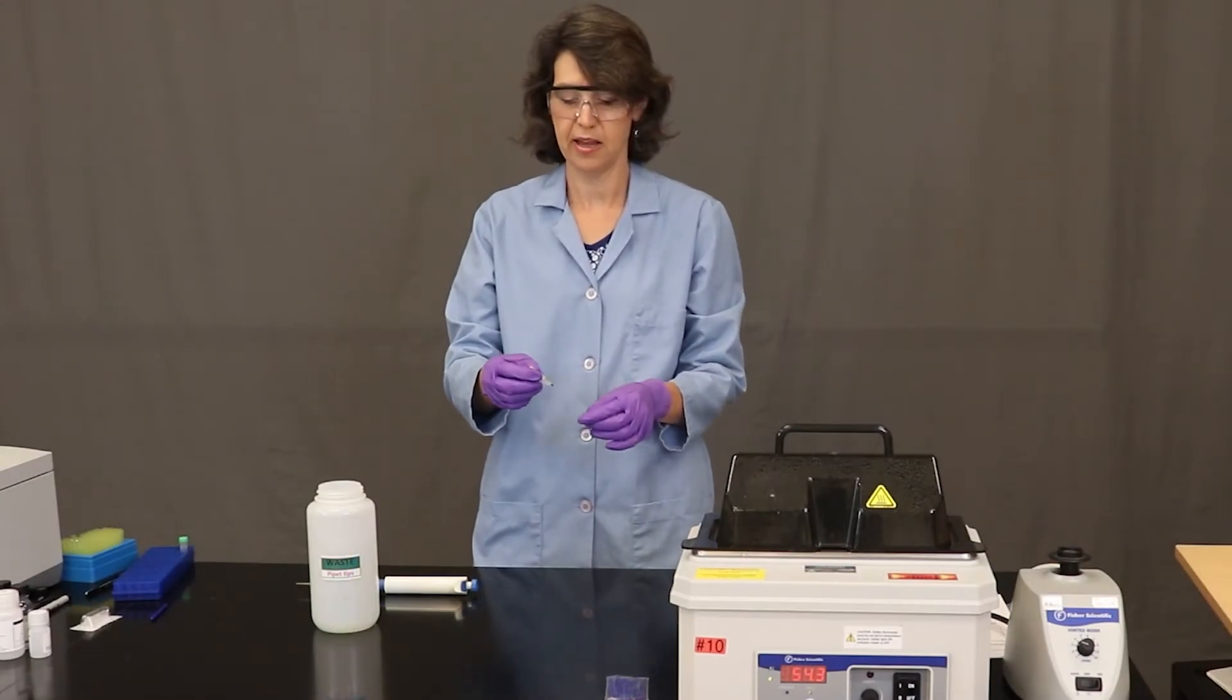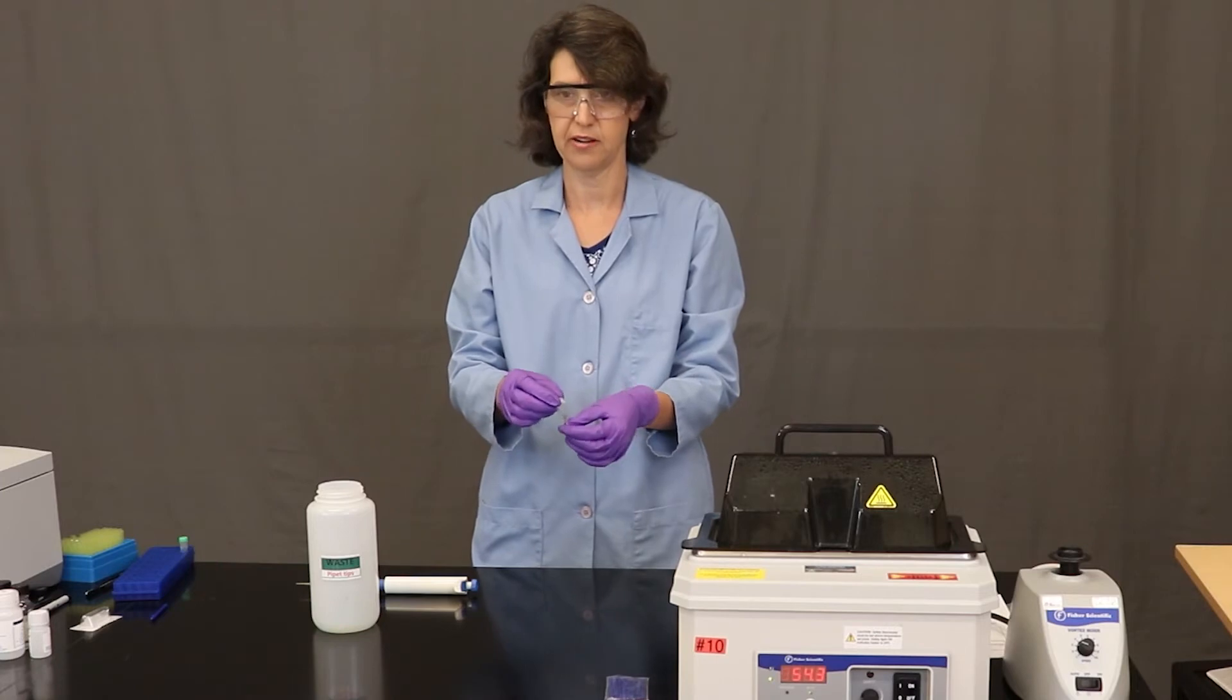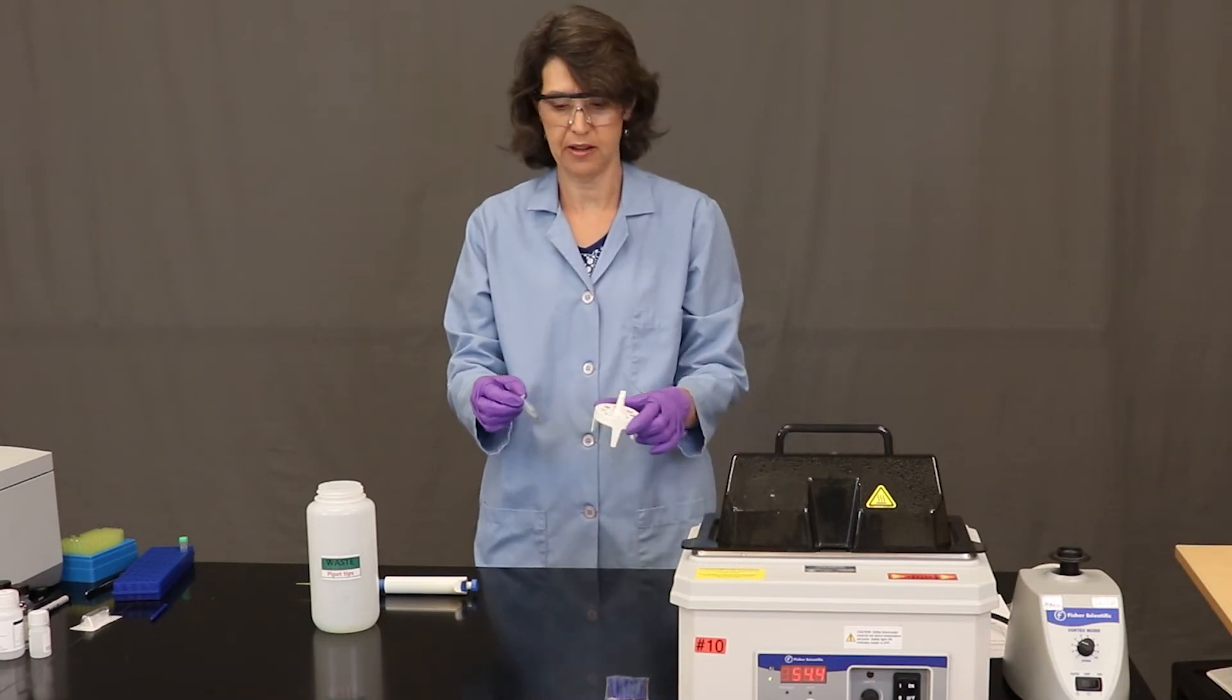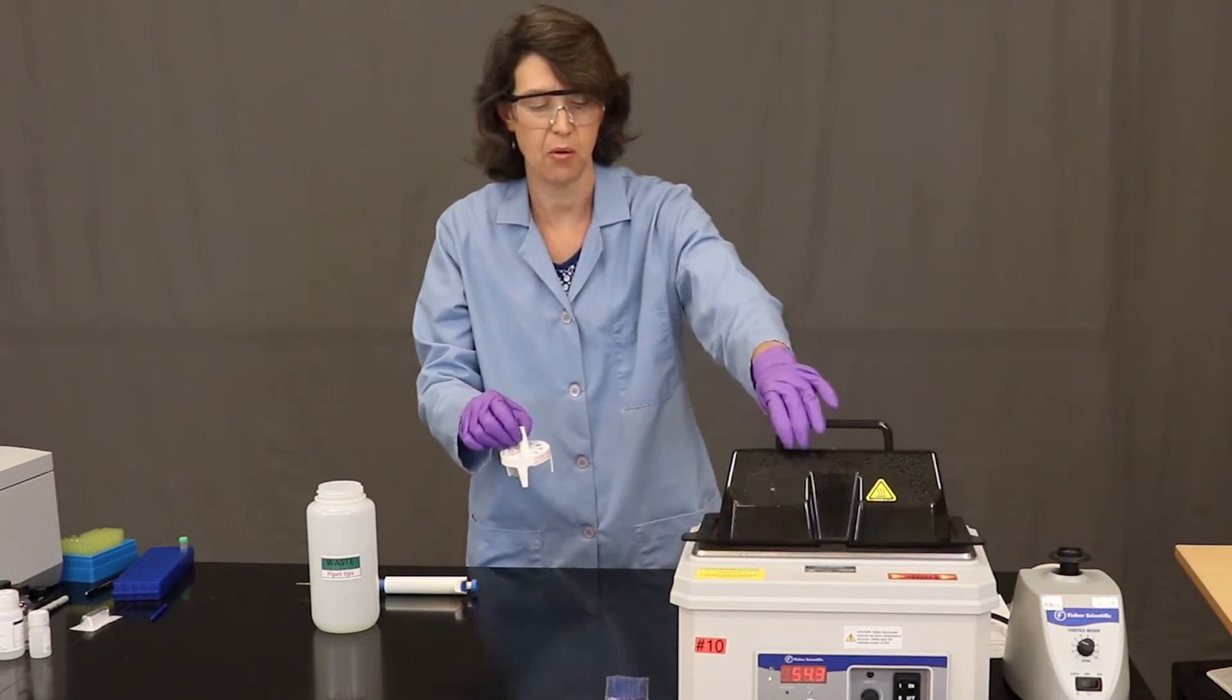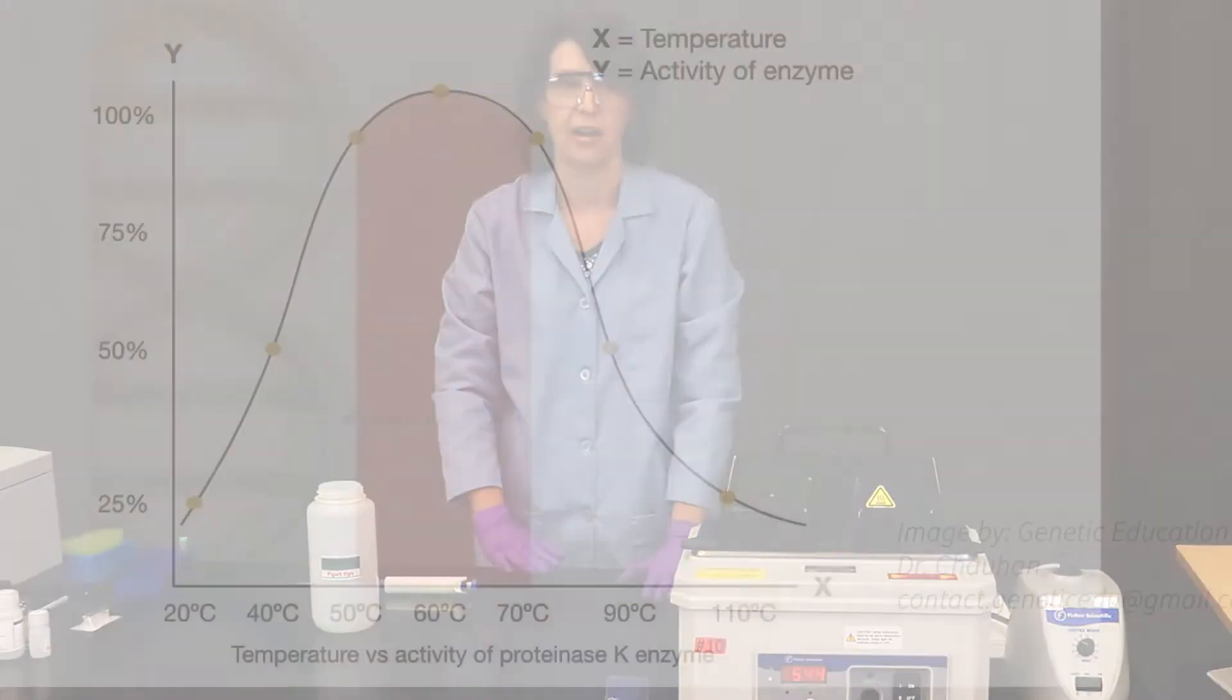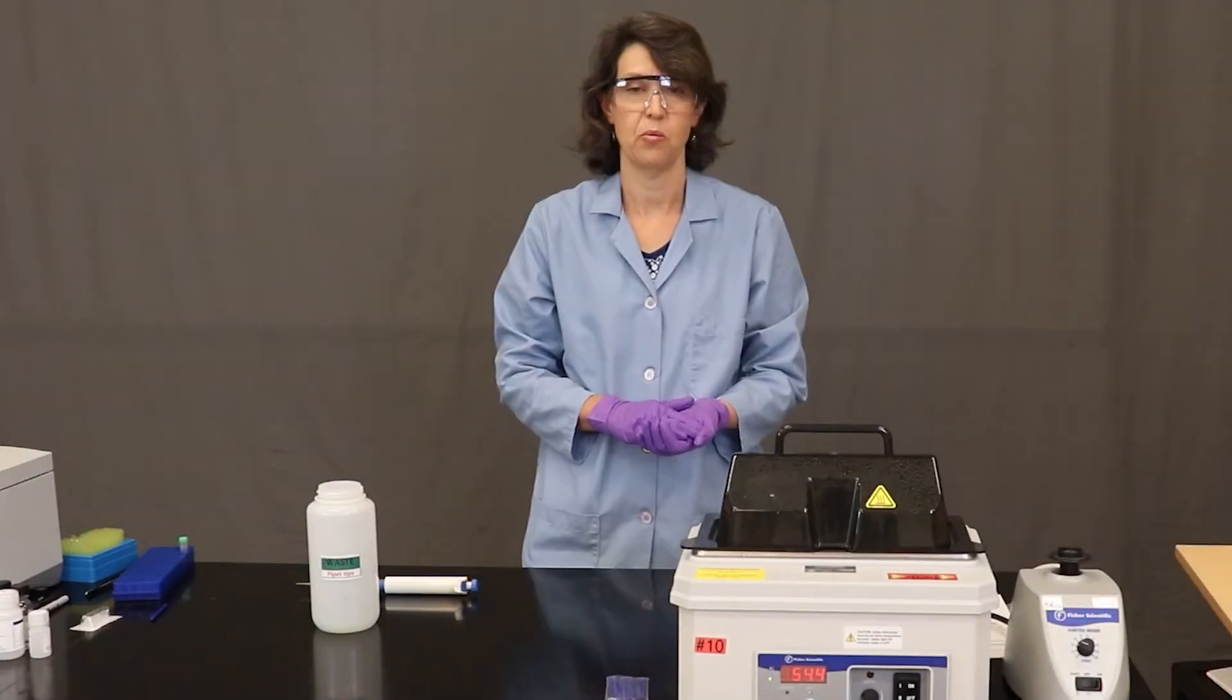So I've got my proteinase K enzyme plus the lysis solution. And I've inverted it several times to mix it. I do see some bubbles in there. So they look soapy. And now I'm going to put the tube in a little float container and place this in a hot water bath. So this particular water bath is set to 55 degrees Celsius. And that happens to be the temperature that is the optimum temperature for enzyme activity of the proteinase K. And we're going to leave that in the water bath overnight.